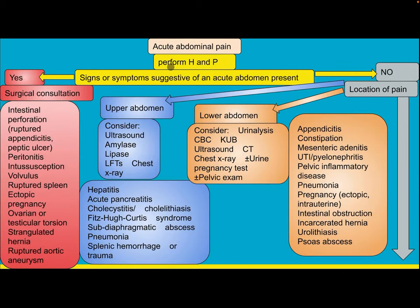Approach to acute abdominal pain in pediatrics after history and physical examination: Is there a sign or symptom suggestive of acute abdomen? If yes, surgical consultation is needed. Differential diagnosis includes intestinal perforation, ruptured appendicitis, peptic ulcer, peritonitis, intussusception, volvulus, ruptured spleen, ectopic pregnancy, ovarian or testicular torsion, strangulated hernia, and ruptured aortic aneurysm.